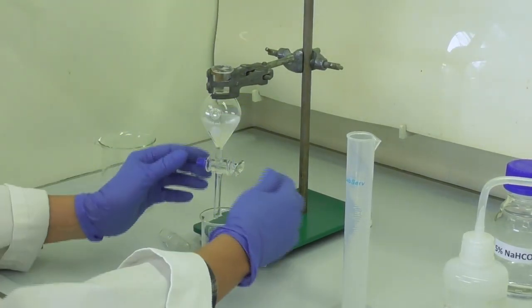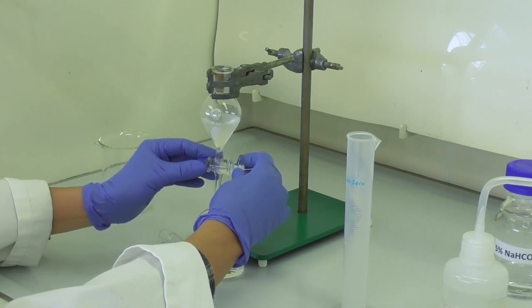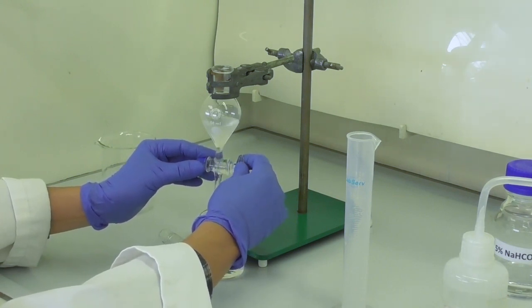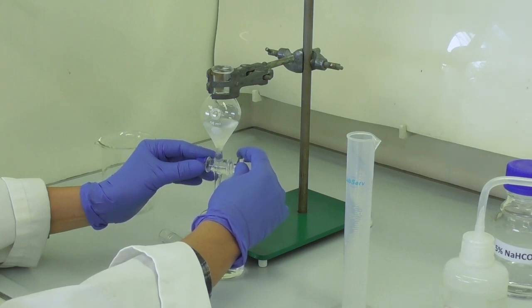We clamp the flask, remove the stopper, and drain the aqueous layer again. This time we want the interface inside the tap, so that we have pure organic phase in our separating funnel.